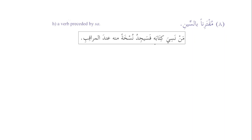Muqtarinan bi-al-sin: sin and sawfa both are used for the future. 'Man nasiya kitabahu fa-sa-yajidu nuskhatan minhu 'inda al-muraqib' — whoever forgets his book, he will find its copy with the controller. Because of al-sin, the jawab al-shart is connected with fa.